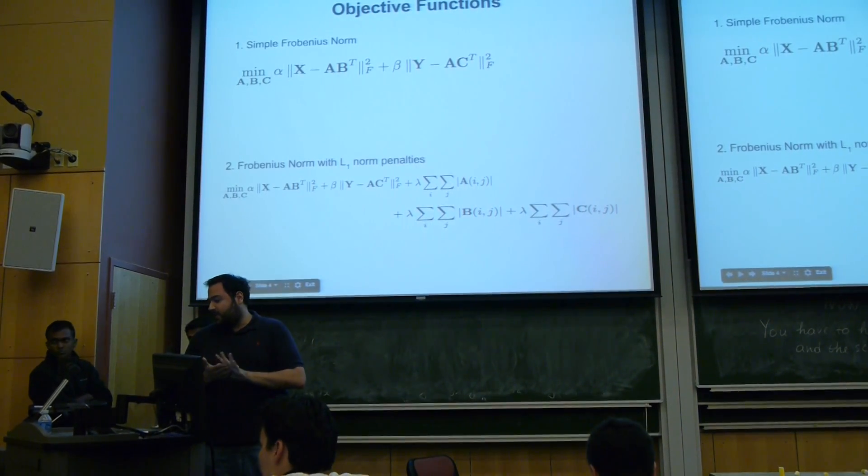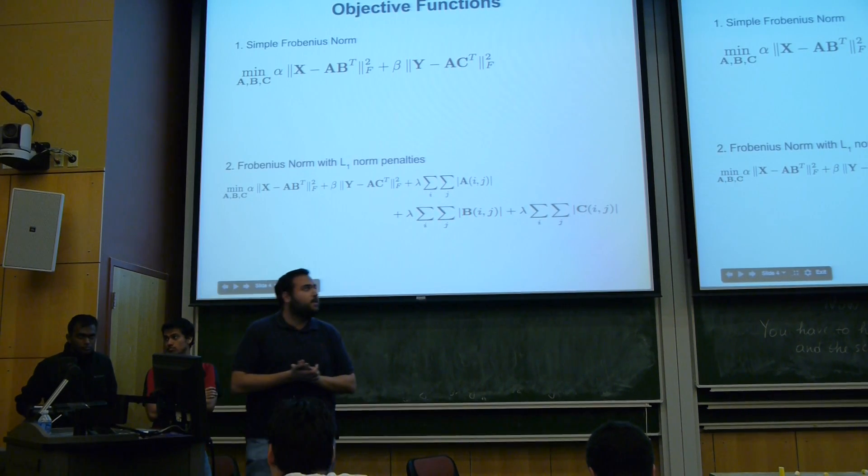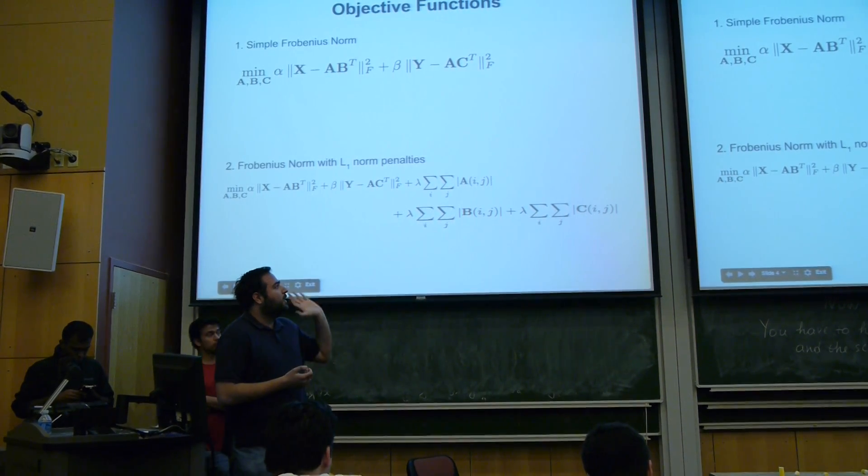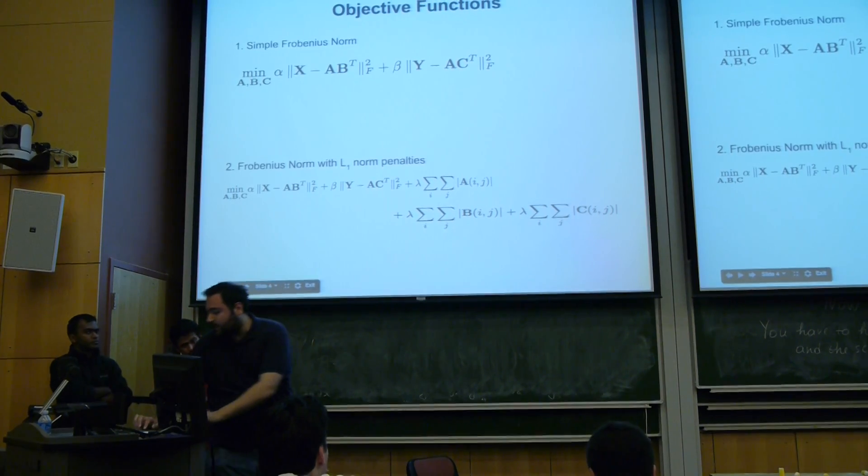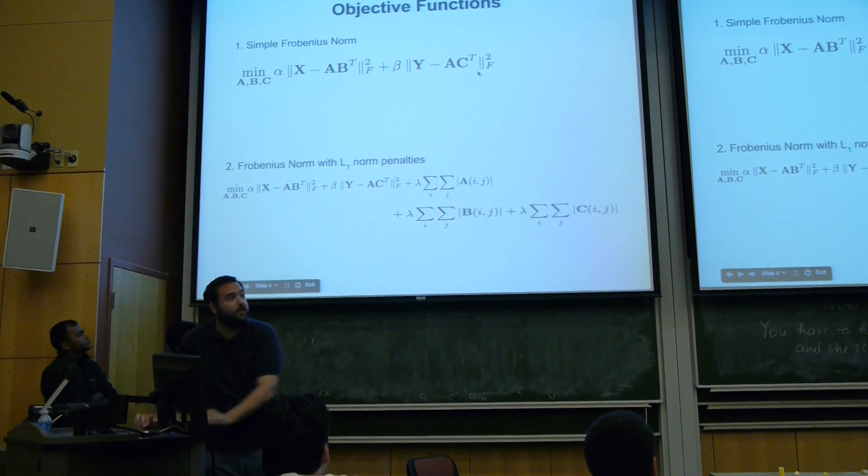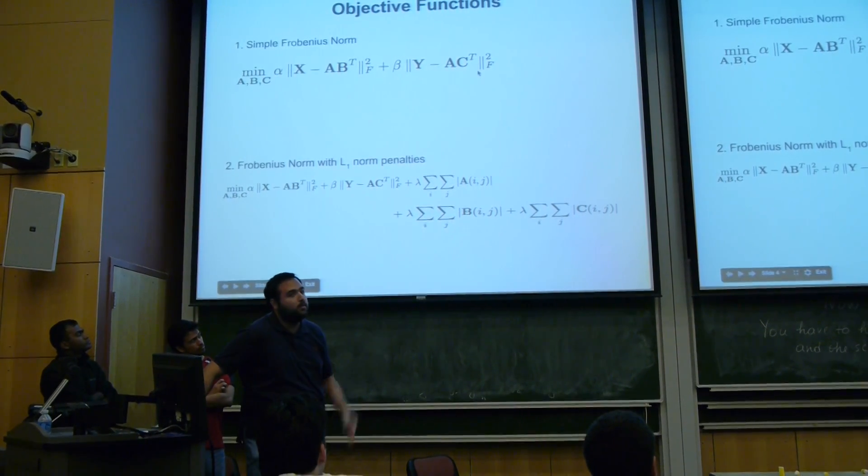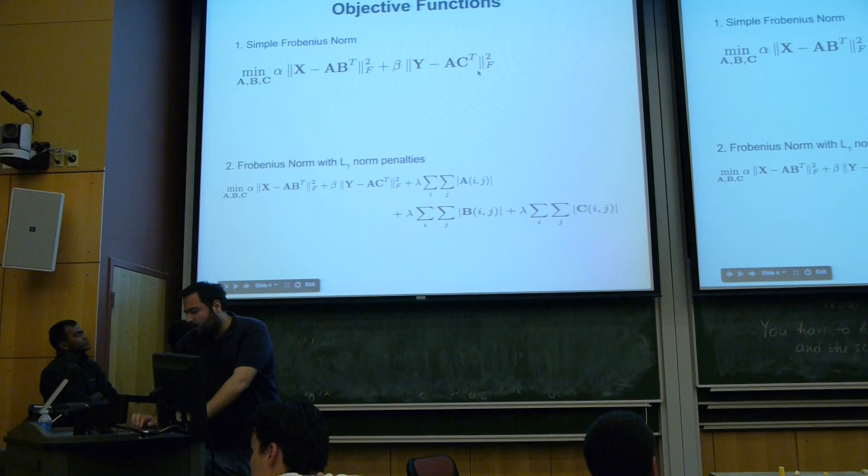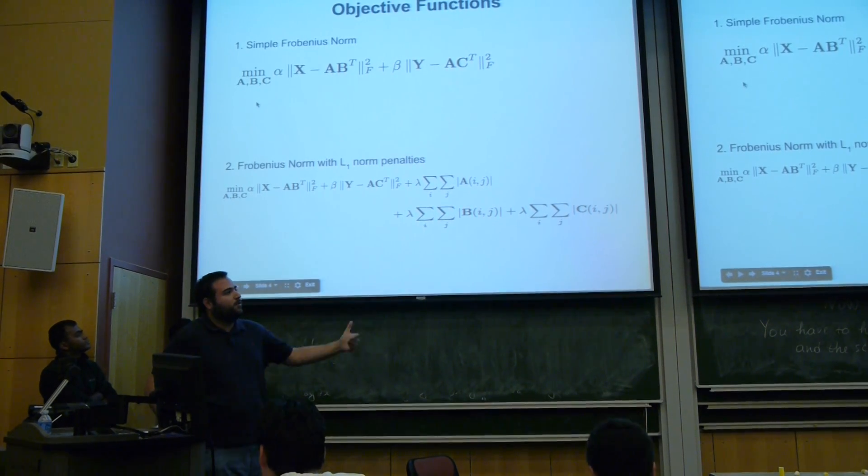A way to solve it now is we use block coordinate descent, which means that this might look hard to solve. But if we see that, if we fix, let's say, we need to optimize over A, B and C. So if we fix B and C, then this is just a least squares regression problem. So we solve for A. And then we fix A and C, we solve for B, and we do it over and over again until we converge.